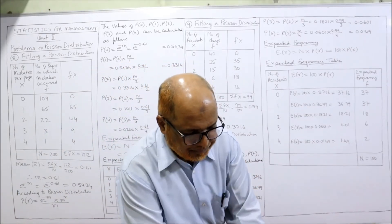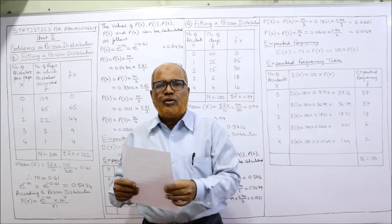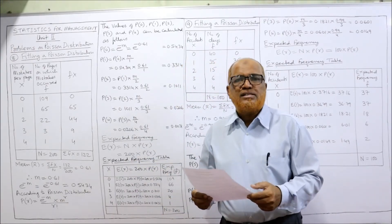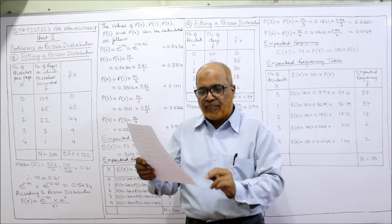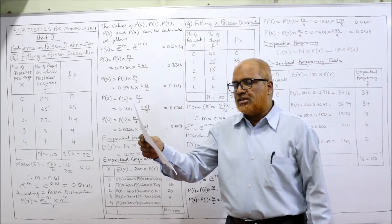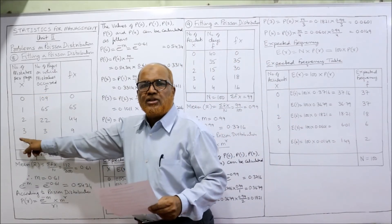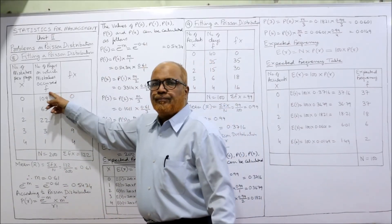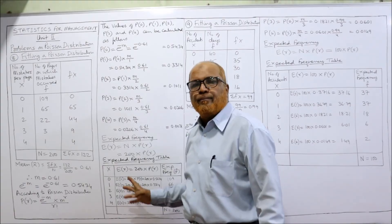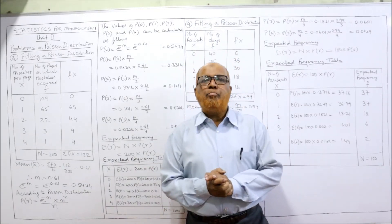In this video I have explained the eighth and ninth problems. The tenth problem is exactly similar to these two, so I am giving it to you as a practice problem — the distribution of typing mistakes committed by a typist. Find the expected frequency using the same procedure: set up columns X, F, and FX, find the mean, then calculate expected frequencies. That covers all ten problems on Poisson distribution.